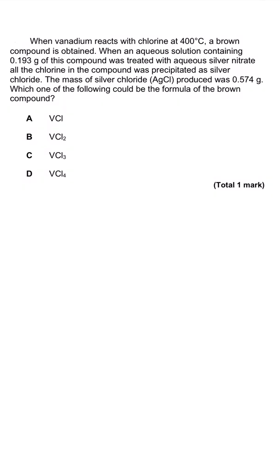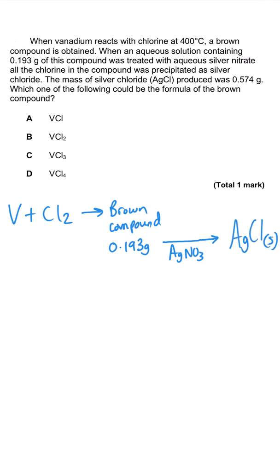In this final question, we're told that vanadium reacts with chlorine and we make a brown compound. Then we're told that an aqueous solution containing 0.193 grams of this compound is treated with silver nitrate, and then all the chlorine in that compound precipitates into silver chloride. The mass of silver chloride produced was 0.574 grams. We've been told in this multiple choice question that we need to work out what the formula is of the brown compound. Obviously this is only going to give us one mark because it's multiple choice, but if it wasn't multiple choice I think we could probably get two, three or four marks depending on how generous they're feeling because there's quite a lot of steps going on in this process. The first thing that we need to do is actually just work out what this brown compound is. Well it's obviously got vanadium and chlorine in it.